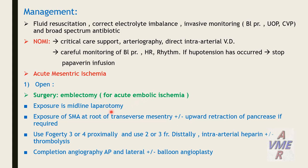Surgical exposure is via a midline laparotomy, exposure of the superior mesenteric artery through the transverse mesentery, and upward retraction of the pancreas may be needed. Use Fogarty 3 or 4 French proximally and Fogarty 2 or 3 French distally. Intra-arterial heparin may be required, as well as thrombolysis infusion, followed by completion angiography, anterolateral and lateral views, and balloon angioplasty if correction of lesions is required.